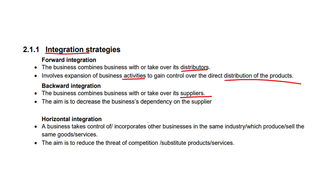So that's forward integration and backward integration. And in terms of horizontal integration, this is when a business takes control of or incorporates other businesses in the same industry which produce or sell the same goods and services. Ultimately, the aim is to reduce the threat of competition or substitute products and services.